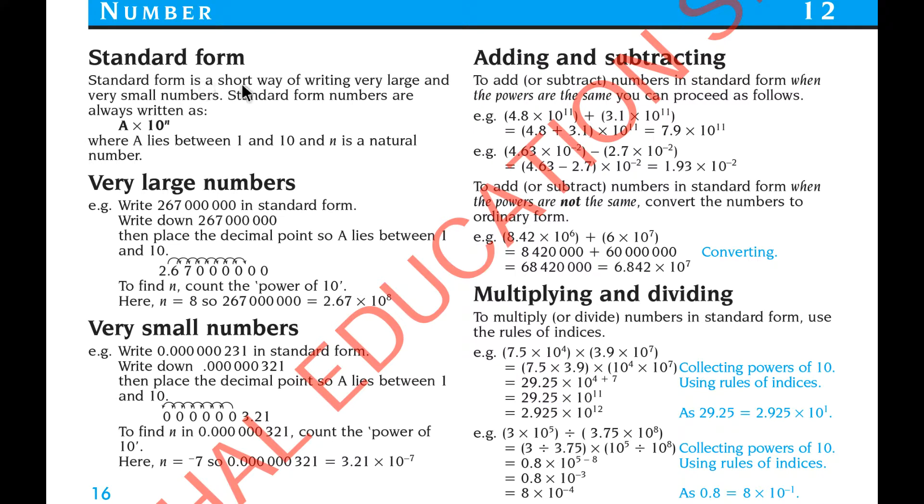So a standard form is a short way of writing very large and very small numbers. Standard form numbers are always written as A multiplied 10 to the power N, where A lies between 1 and 10 and N is a natural number. Even you can keep decimals, like consist decimals with this A.